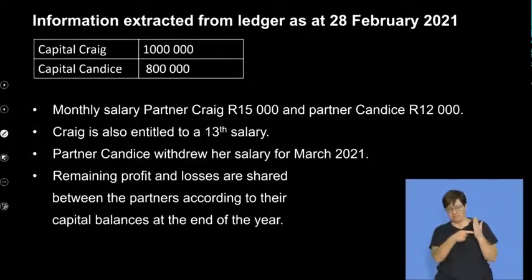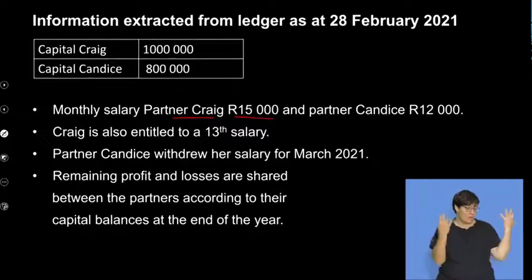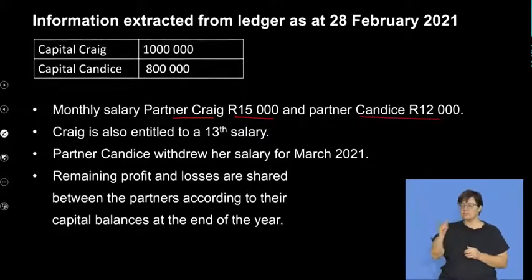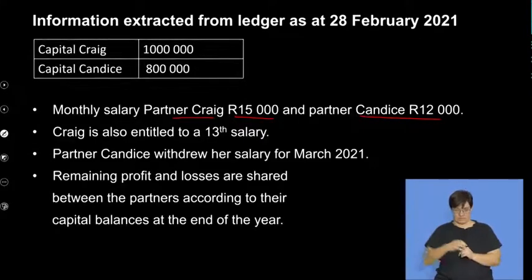The monthly salary for partner Craig is $15,000, so that's what he's entitled to per month. And then we've got partner Candice with an amount of $12,000. So we're focusing on Craig.